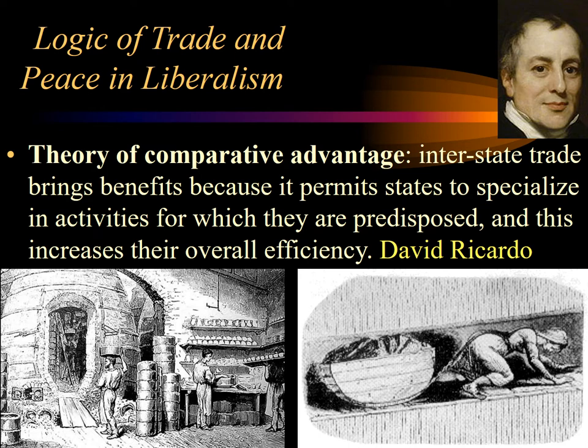Ricardo gave the illustration of the English exporting wool to Portugal in exchange for the Portuguese exporting their wine to England. The alternative would be for the English to produce their own wine and for the Portuguese to produce their own wool. In both cases, the English wine would be of lower quality, lower quantity, and higher cost, and Portuguese wool would be of lower quality, lower quantity, and higher cost. So both the Portuguese and the English benefit by engaging in trade — it's a positive sum game. Everybody wins.